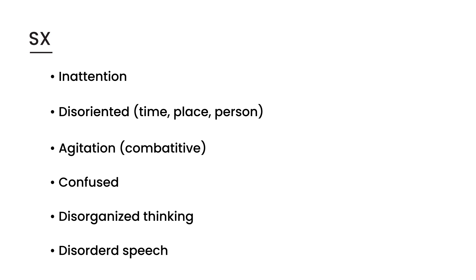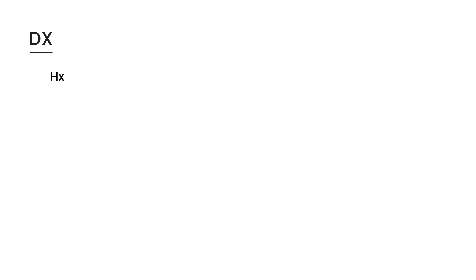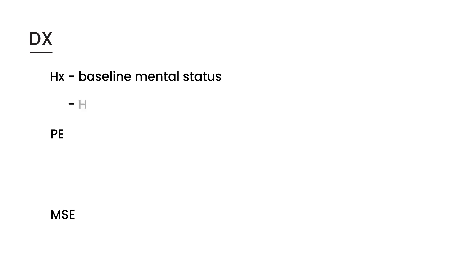How do you diagnose delirium? Interestingly, it is entirely based on history, physical exam, and a mental status exam — no expensive tests are needed. The history involves figuring out the baseline mental status of the patient before the episode began — were they normal? This can be done by asking family members. Another important step is checking the medications to see what the patient is on, which will be an important clue.